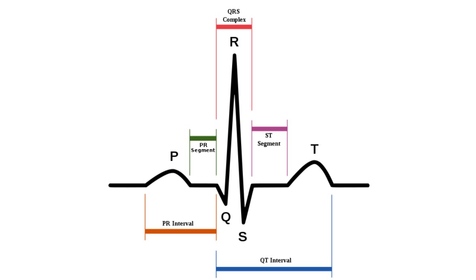In addition to those deflections, we also have intervals and segments. A segment is the time between deflections on an EKG, while an interval includes the waves themselves. The intervals and segments that we will discuss are the PR interval, the PR segment, the QT interval, and the ST segment.